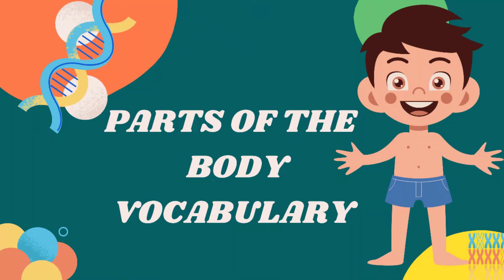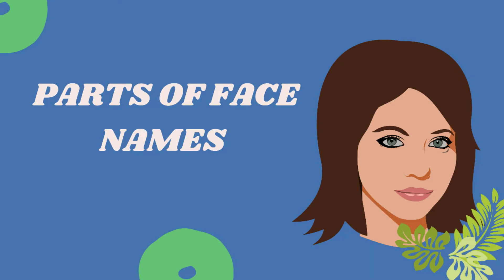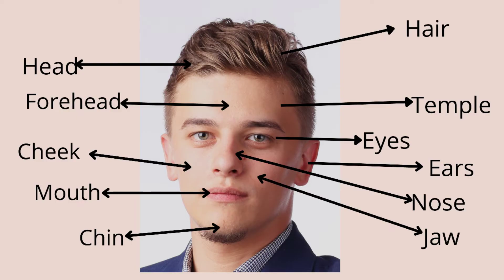Hello students, welcome back to our channel. Today we learn about parts of the body vocabulary in English. Parts of face names: head, forehead, cheek, mouth, chin, hair, temple, eyes, ears, nose, jaw. These are the parts of the face.